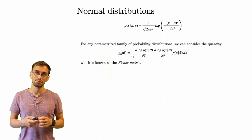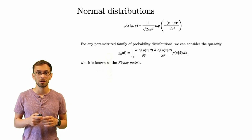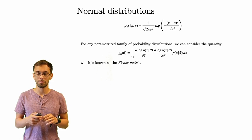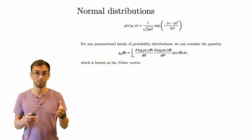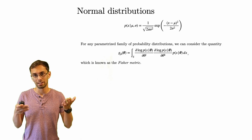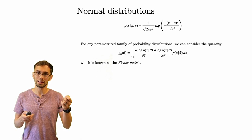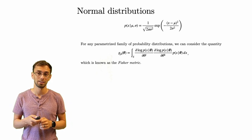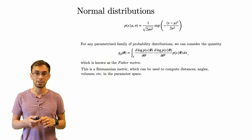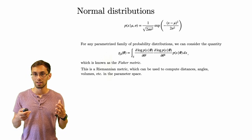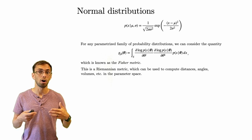For any parametrized family of probability distributions — not just the normal family, this works in general — we can consider the following quantity known as the Fisher metric, which is actually a matrix. The way we compute this matrix is we take our probability density or mass function, take the log of that, differentiate it with respect to the parameters, and compute this integral. We get a matrix with indices jk, because we have to do this for any pair of parameters. This matrix depends smoothly on the point of parameter space, so it's actually a Riemannian metric — it's positive definite and symmetric — from which we can compute distances, angles, volumes, curvatures, and all sorts of geometric information.